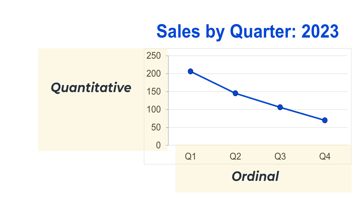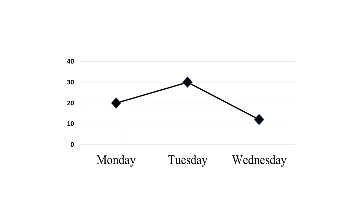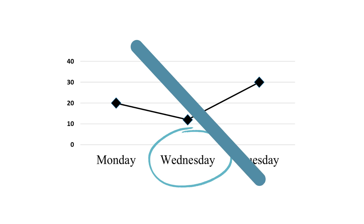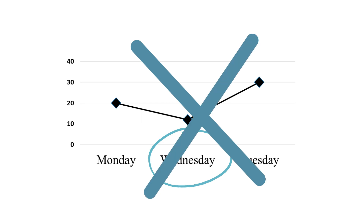Unlike a bar chart, on a line chart an ordinal axis cannot be sorted out of order. Think of a line chart as a timeline, and there is no time travel allowed on the timeline. So if we have a chart that's plotting data for Monday, Tuesday, and Wednesday, we cannot take the data point for Wednesday and move it before Tuesday because the data did not occur in this order.